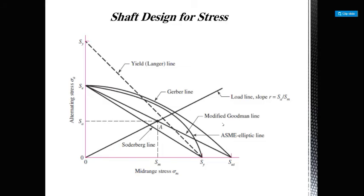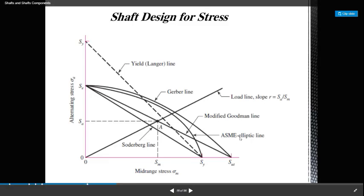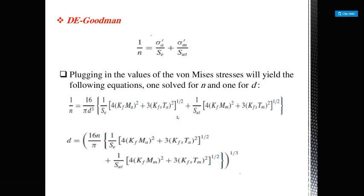Here you can find the shaft design force traces showing the alternating stress versus mid-range stress diagram. The diagram includes the Soderberg line, the ASME elliptical line, the modified Goodman line, the Gerber line, and the Langer line. This is the basic diagram related to shaft design stress criteria.